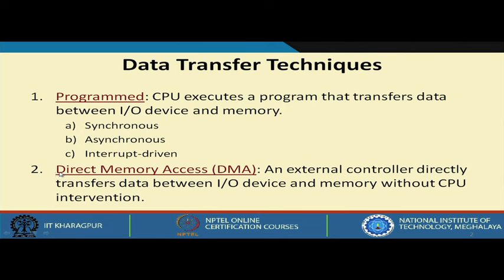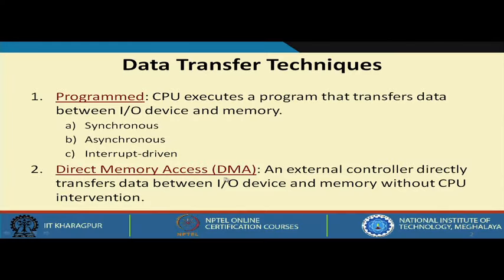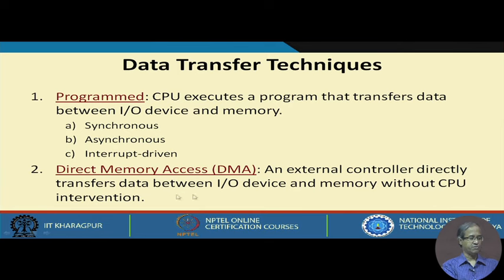The other alternative is Direct Memory Access or DMA. Here the CPU has very minimal intervention — the CPU does not execute any program. Rather, there is a separate external controller that will directly transfer data between the I/O device and memory without disturbing the CPU. The CPU may continue with whatever it was doing.